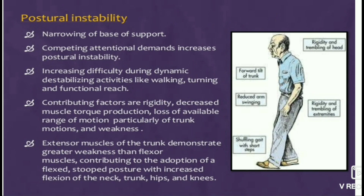Postural instability is characterized by narrowing of the base of support. Competing attentional demands increase postural instability, and there is increasing difficulty during dynamic destabilizing activities like walking, turning, and functional reach. Contributing factors include rigidity, decreased muscle torque production, loss of available range of motion particularly of trunk motions, and weakness. Extensor muscles of the trunk demonstrate greater weakness than flexor muscles.